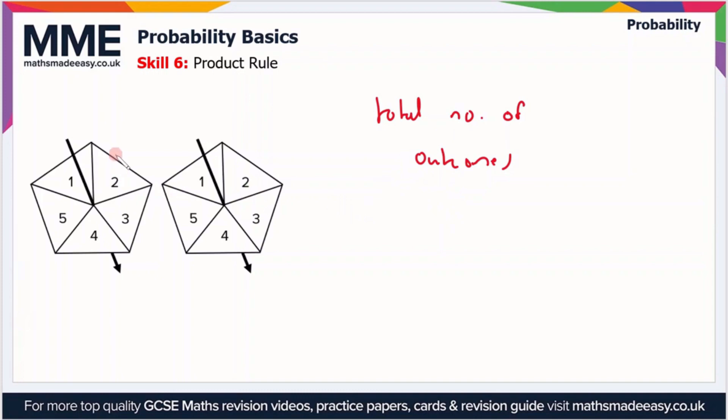If I look at the spinner on the left, that was spinner one, the one on the right spinner two. If I want to know the total number of outcomes, I can total up the number of outcomes for spinner one, and that is five, because there's just numbers one, two, three, four, and five.